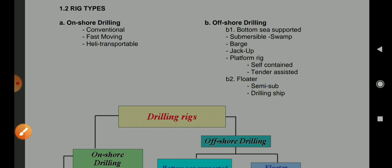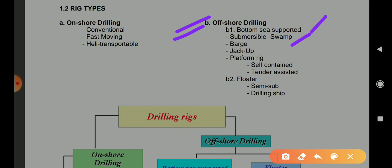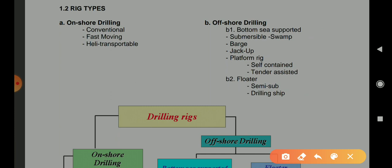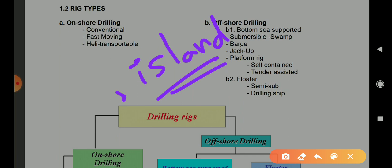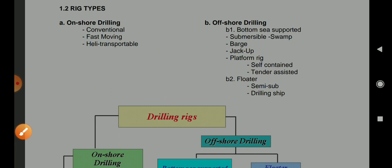The next category is B — offshore drilling. In offshore, the first type is bottom-supported. Bottom-supported includes: submersible (swamp type), barge type, jack up, and platform rig (self-contained and tender-assisted). The second offshore type is floater, which includes semi-submersible and drill ships. Apart from these two, there is also island drilling, which mostly comes under onshore, but is used where land availability is very limited.